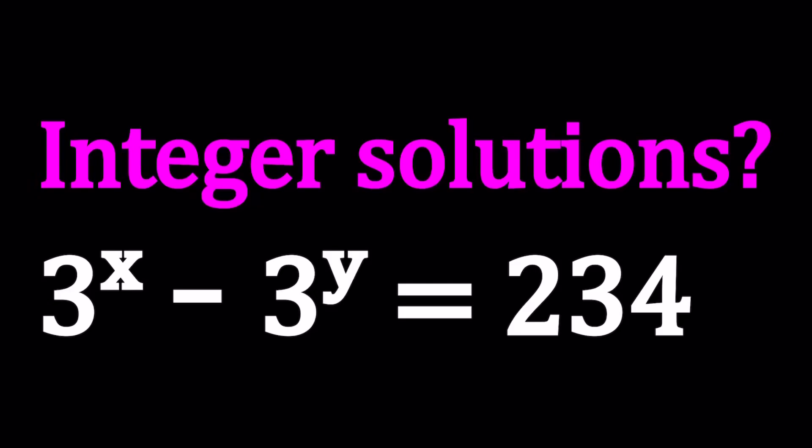Hello everyone. In this video, we're going to be solving a Diophantine equation. We have 3 to the power x minus 3 to the power y equals 234, and x and y are integers. That's why it's called a Diophantine equation.